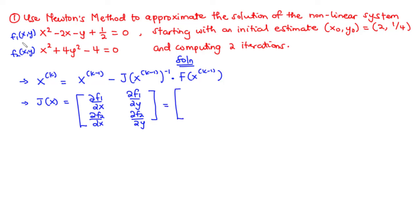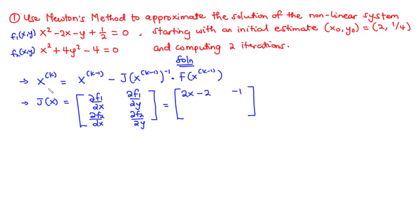For f₁, the partial derivative with respect to x: we treat y as constant, differentiate x² to get 2x, differentiate −2x to get −2, and the constants −y and 1/2 go to zero. For the partial derivative of f₁ with respect to y: x²−2x becomes constant, differentiating −y gives −1, and 1/2 is constant so it goes away.